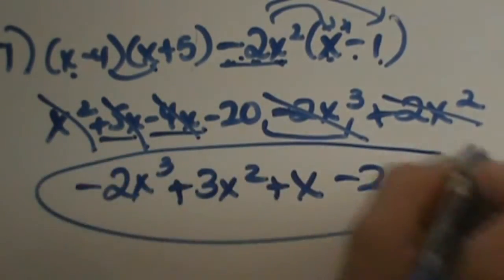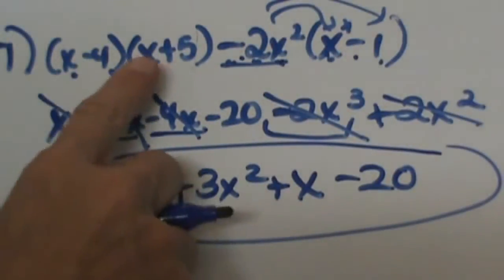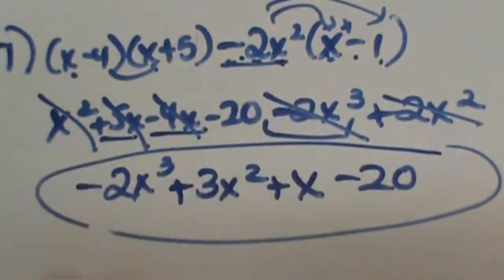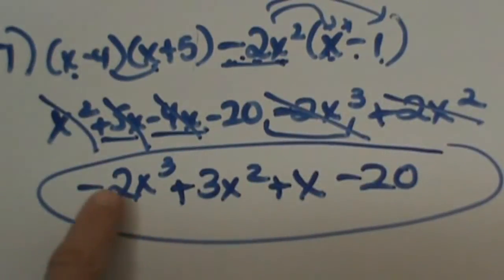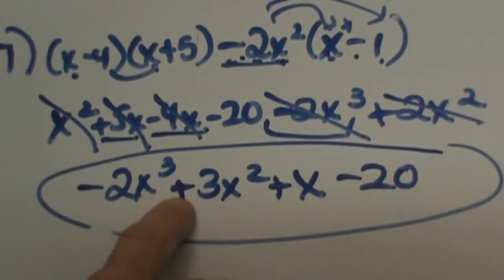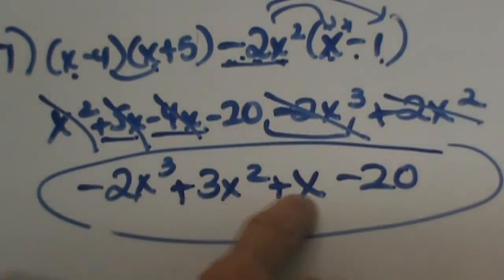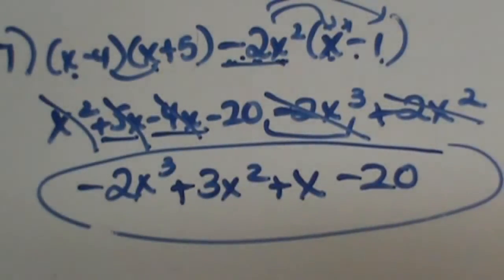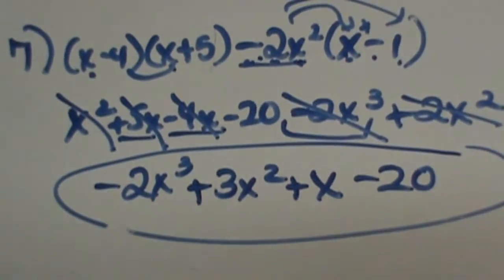So there we go. That is what the binomials and that monomial distributed and simplified to: negative 2x cubed plus 3x squared plus x minus 20. So let's do one more of these fancy problems.